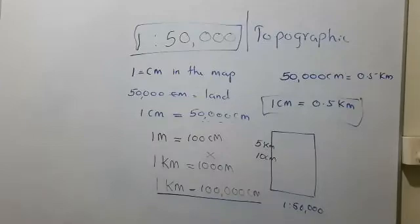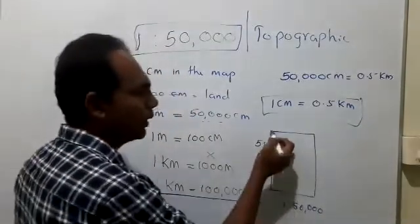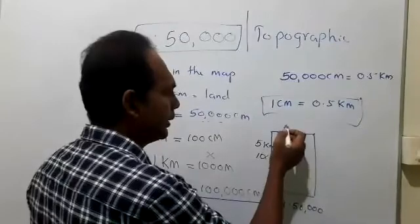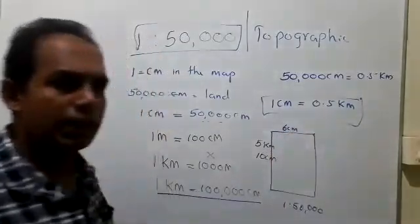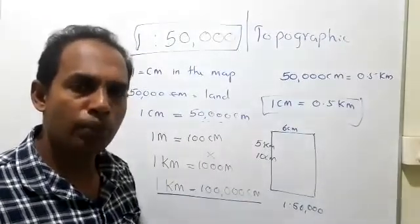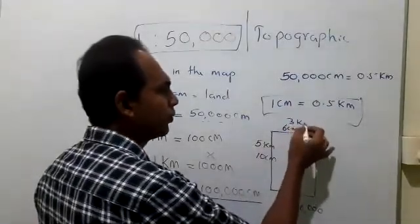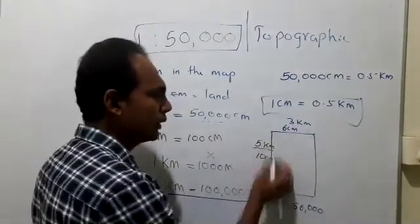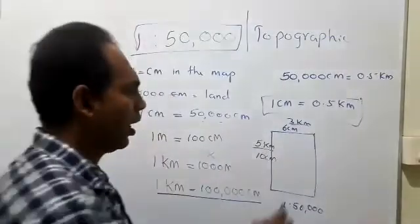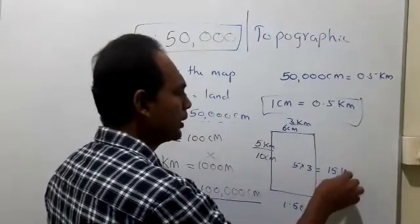To the other side, again use the ruler and measure the distance in centimeters. We will say there are 6 centimeters. Now convert it into kilometers: 6 centimeters means 3 kilometers. So we have 5 kilometers and 3 kilometers. The area is 5 multiplied by 3, which equals 15 square kilometers.